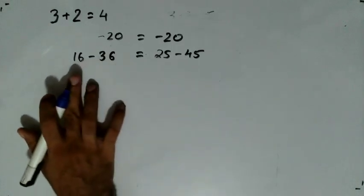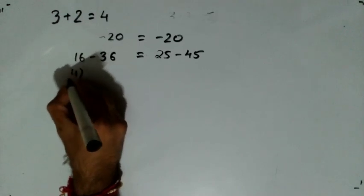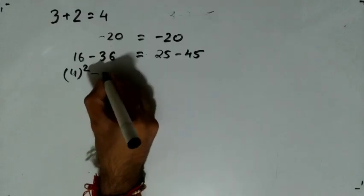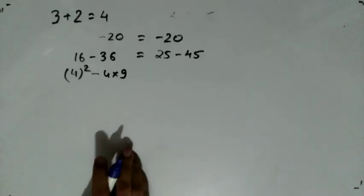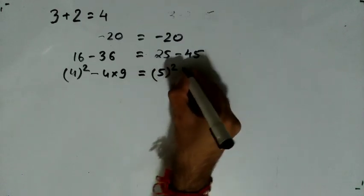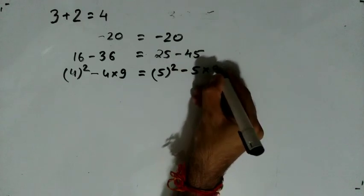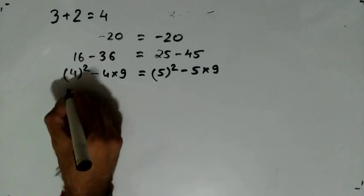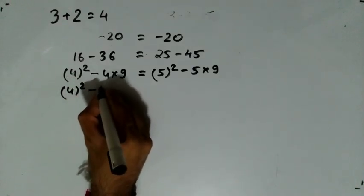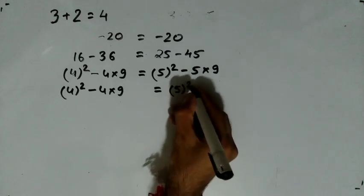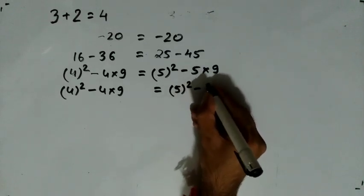I will not make a rule break. 16 minus 36 is equal to 4 squared minus 36, which equals 4 times 9. 4 multiplied by 9 is equal to 36. 25 is equal to 5 squared; 5 squared minus 5 multiplied by 9 — no mathematical rule break. 5 squared minus 5 into 9 is 5 squared; 25 minus 5 into 9 is equal to 45. So, 4 squared minus 4 into 9 is equal to 5 squared minus 5 into 9.